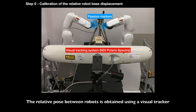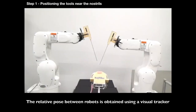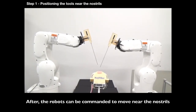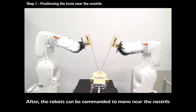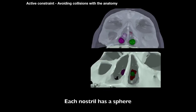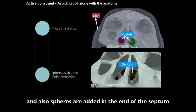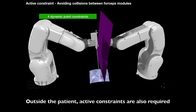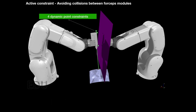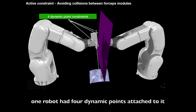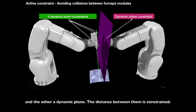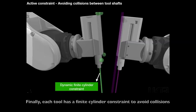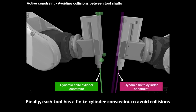Experiment B: Constrained workspace manipulation. The relative pose between robots is obtained using a visual tracker. After, the robots can be commanded to move near the nostrils. Each nostril has a sphere, and also spheres are added at the end of the septum, whose distance to the tool centerline is limited. Outside the patient, active constraints are also required. One robot had four dynamic points attached to it, and the other a dynamic plane. The distance between them is constrained.